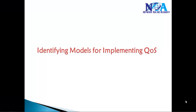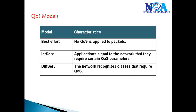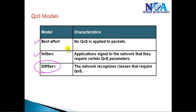In this video we'll see the different models that can be used to implement Quality of Service. There are three different models used for implementing QoS. We use the last one in today's networks — Differentiated Services — but initially there were other models like Best Effort and Integrated Services.